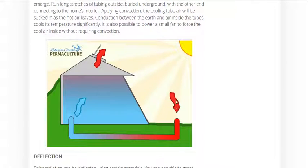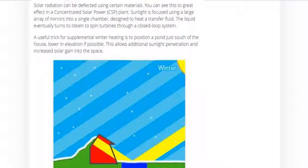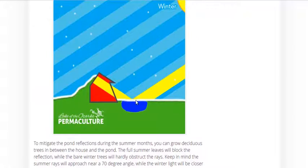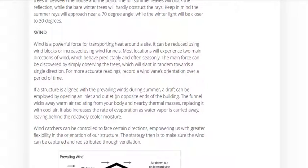Earth tubes bring hot air from outside through the ground where it loses heat energy before entering the home. As it's naturally heated, it rises out the top. They also talk about reflection of energy off a pond to heat in the wintertime. If you put deciduous trees that lose their leaves in winter, then in summertime they'll help keep it cooler by limiting the reflection off the pond.